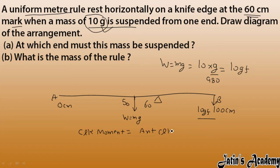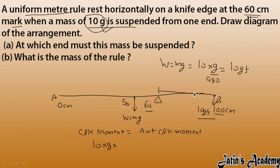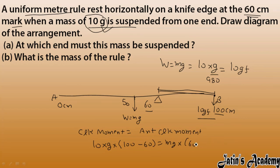The 10 gf force is creating the clockwise moment: force times perpendicular distance = 10g × (100 − 60) = 10g × 40. The weight mg of the rule creates the anti-clockwise moment: mg × (60 − 50) = mg × 10. So the equation is: 10g × 40 = mg × 10.